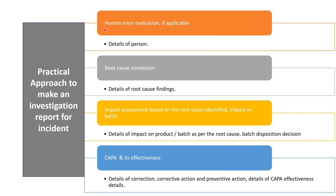The human error evaluation section, if applicable, defines details of the person involved when analyst-related incident is identified through detailed investigation. The root cause identified may be instrument-related or analyst-related. The impact assessment section based on root cause covers impact on batches — for example, no impact if the sequence was interrupted before sample injection. The CAPA and effectiveness section details corrective action, preventive action, and CAPA effectiveness monitoring if CAPA has been initiated.